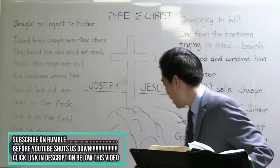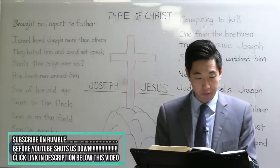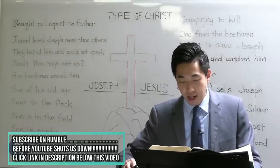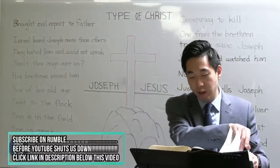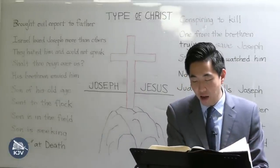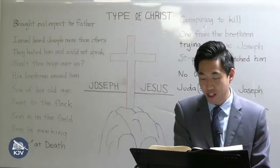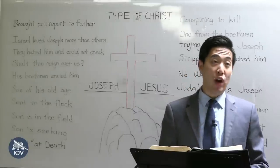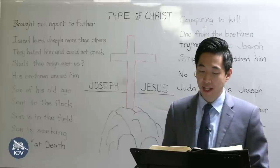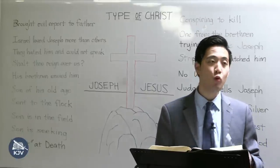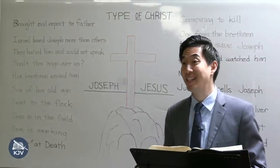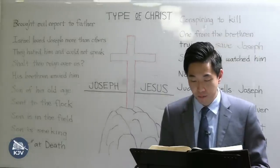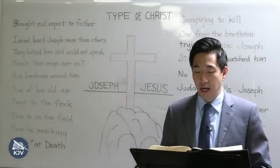Genesis chapter 37, verse 1. The Bible says: 'And Jacob dwelt in the land wherein his father was a stranger, in the land of Canaan.' Jacob lived in the land where his own father Isaac resided. Isaac was a stranger in that land — not a permanent citizen, just an immigrant, a traveler. So Jacob is continuing in his father's stead.